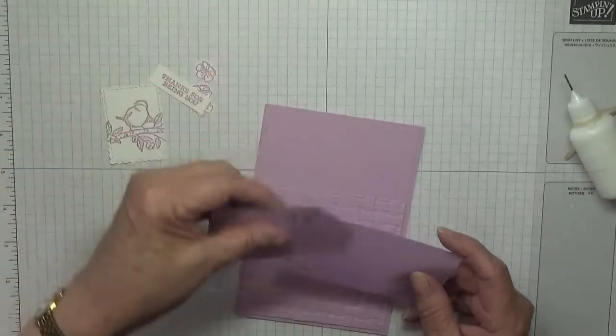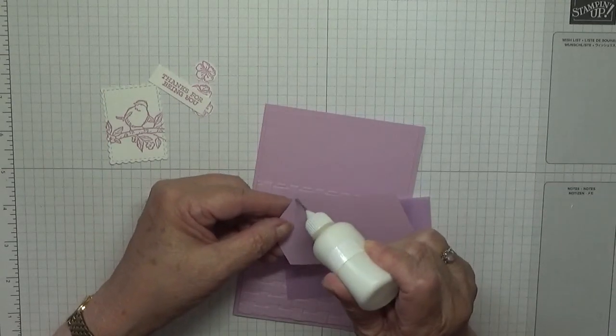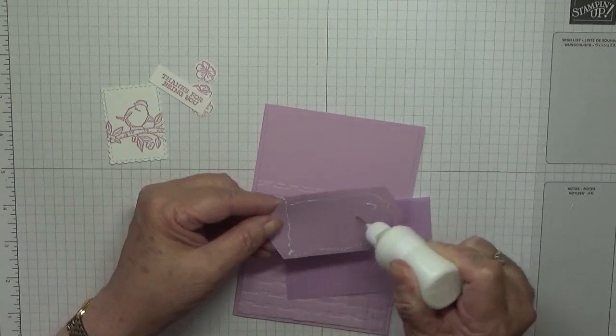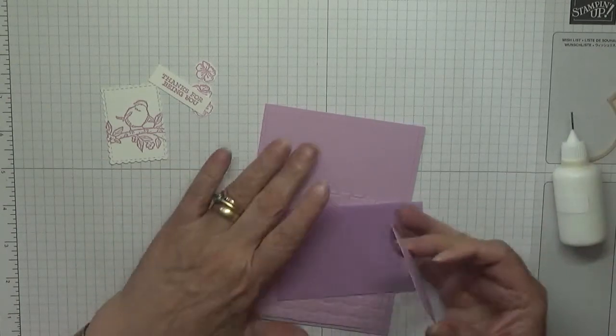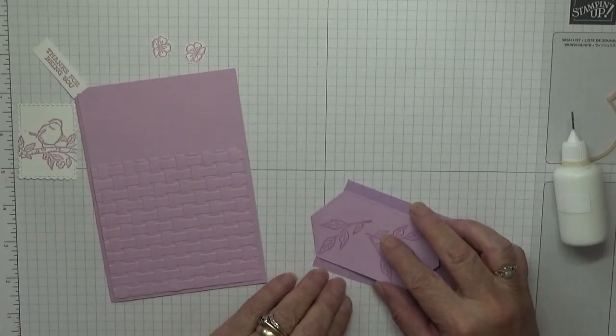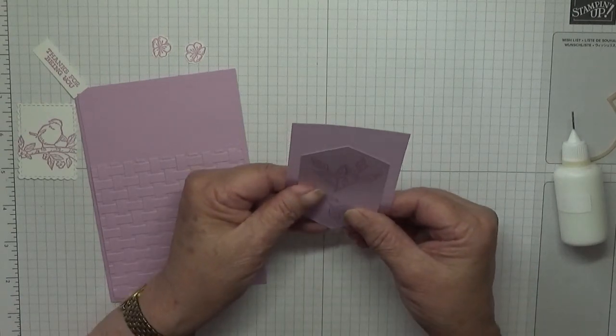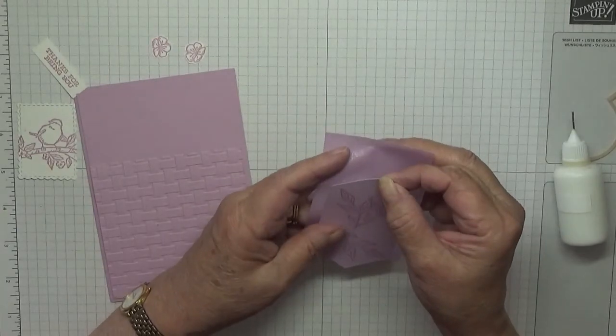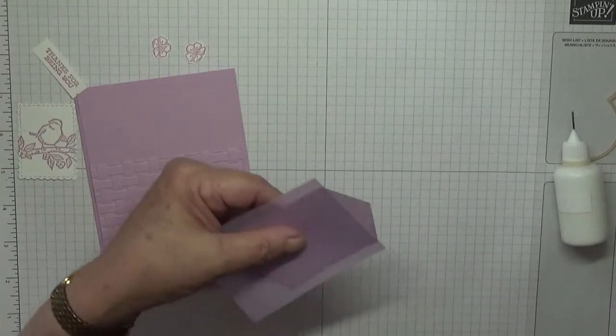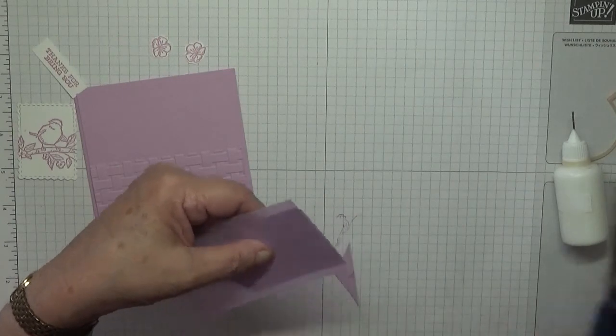Like this, we're going to stick on there like that, only to this straight bit. We don't need this pointy end. I am going to pop that down, hopefully straight and in the middle, and then we're going to trim this off.